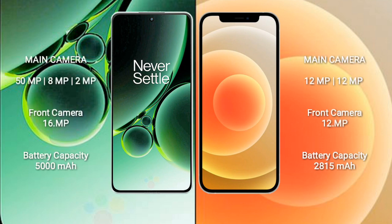OnePlus Nord 3 features a triple rear camera setup: 50MP plus 8MP plus 2MP, and a 16MP front camera. iPhone 12 features a dual rear camera setup: 12MP plus 12MP, and a 12MP front camera.